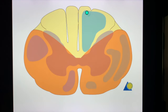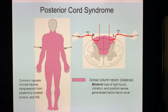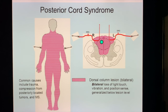As you can see, the yellow area here represents the posterior columns. In posterior cord syndrome, common causes would include trauma — that's number one on the list — or compression from tumors, and even multiple sclerosis.